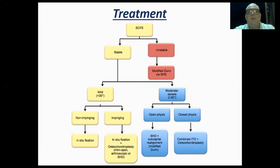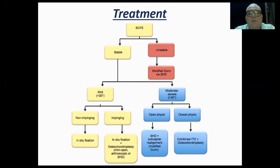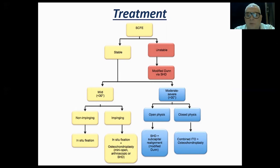Our algorithm: for stable types — mild, moderate, or severe — if mild with no impingement, proceed to in-situ fixation. If there is impingement, do in-situ fixation with osteochondroplasty. If unstable, you can do reduction and fixation or a modified Dunn procedure for open reduction, according to your experience. For moderate or severe slips with more than 30 degrees and open physis, you can try to reduce it, or if the physis is closed, perform intertrochanteric osteotomy and osteochondroplasty. A modified Dunn procedure carries a high risk of AVN.